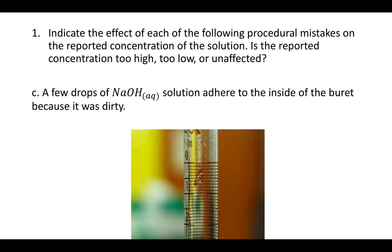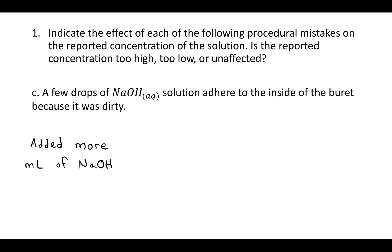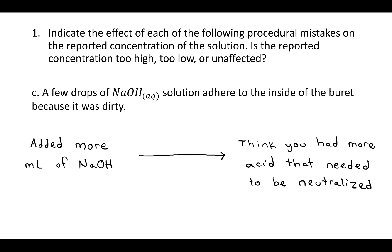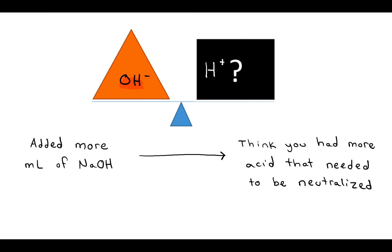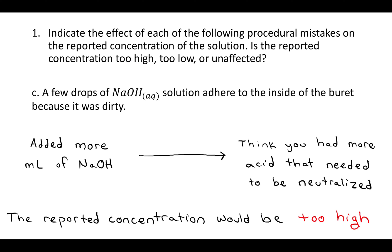Case C says a few drops of sodium hydroxide solution adhere to the inside of the burette because it was dirty. If that happens, you would think that you dispensed that NaOH into the analyte — it's not in what you're reading, which is the solution up to the meniscus. It's still in the burette, but you aren't taking that into account; you're thinking it went into the analyte. So you would think you added more NaOH than you actually did, which means you would think you had more acid that needed to be neutralized, and the reported concentration of the acid would be too high.